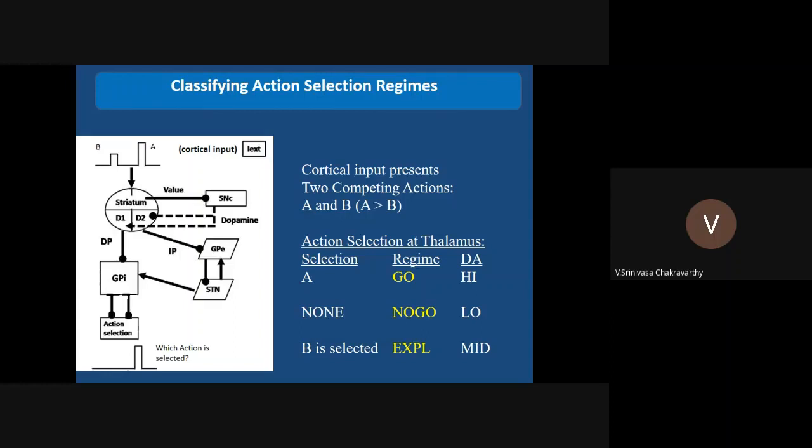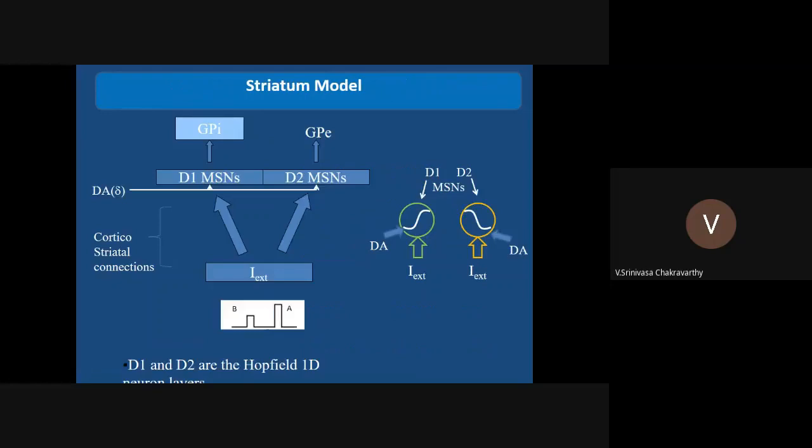The input to this whole network, the basal ganglia circuit - input is what you see at the top. You have two rectangles, A and B. A is stronger input than B. This pulse represents some kind of saliency of that stimulus. The system, the network should be able to select this more salient input and ignore the other one. That means the output should select A and not B. It's a very simple problem. Let us see how the network architecture will be able to do something like this.